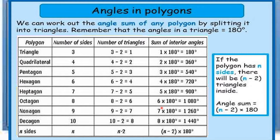To find the sum of the interior angles of any polygon, the formula is: (N-2) × 180 degrees, where N is the number of sides and N-2 is the number of triangles formed. Take note of this formula.